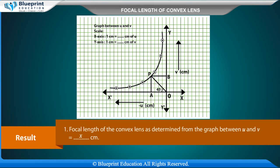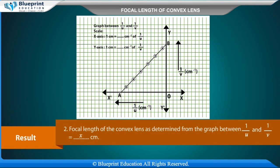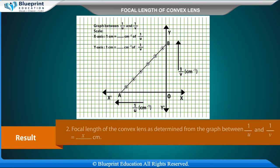Result: Focal length of the convex lens as determined from the graph between U and V = X cm. Focal length of the convex lens as determined from the graph between 1/U and 1/V = X cm.